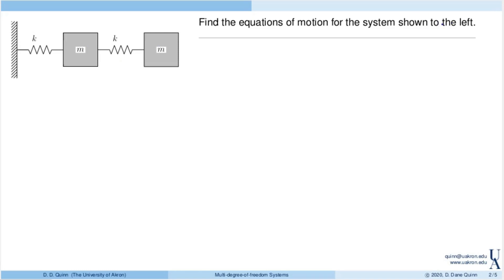We'd like to find the equations of motion for this system. Our modeling strategy starts off by thinking about the problem, identifying the forces, then we'll turn to coordinates and directions. After that, kinematics — describing the acceleration and motion of each mass — followed by free body diagrams to identify and define the forces. Finally, we'll apply the equations of motion and laws of mechanics to come up with the resulting model.